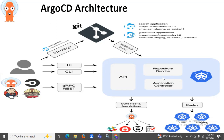As you can see in this architecture diagram, there is the API, then the Repository Server, and the Application Controller. You can also see sync hooks, app actions, deploy, staging, and the git PR merge flow, with the user interface, CLI, and REST interactions shown. So that's the ArgoCD architecture.